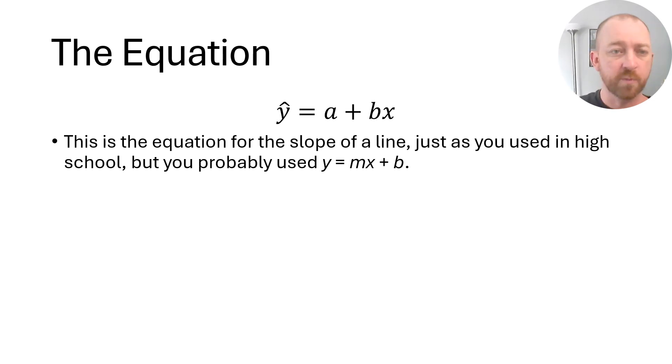If this is the equation for the slope of a line, you've probably used that before, except you may recall it as Y equals MX plus B, where M was the slope of the line, the rise over the run. X was the variable along the X axis, and B was the intercept. That's essentially what we're doing here. I've just switched around some of the letters for our purposes.